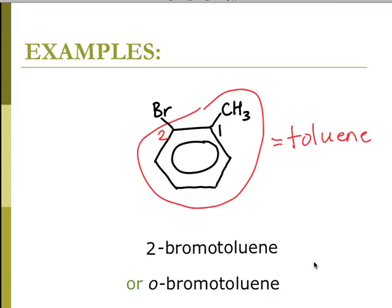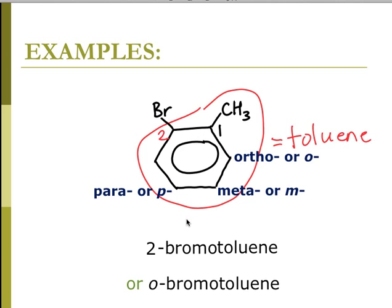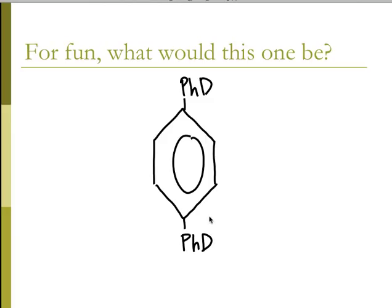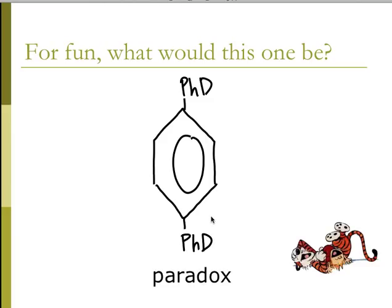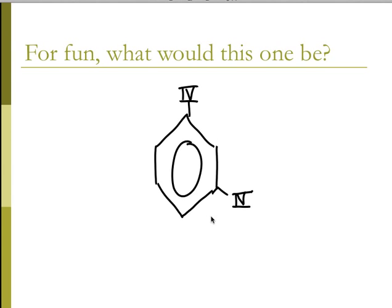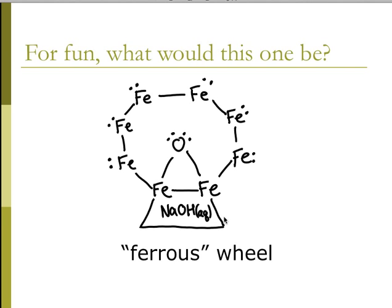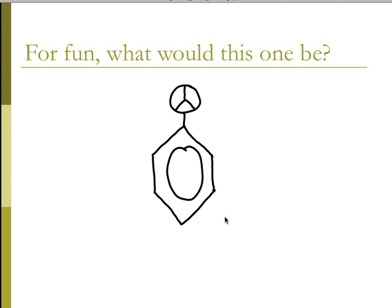There's also ortho, meta, and para notation for benzene rings. Ortho means the two functional groups are right next to each other. Meta means they are one position removed — so for instance that would be a metaphor. Para means they are opposite from each other. If that doesn't make sense, please ask.